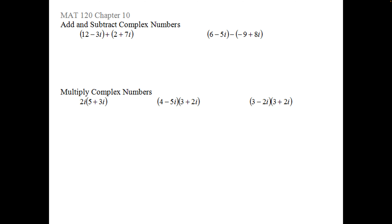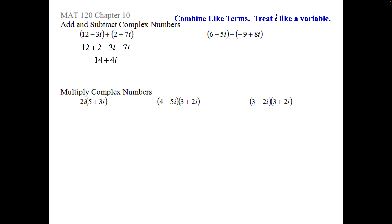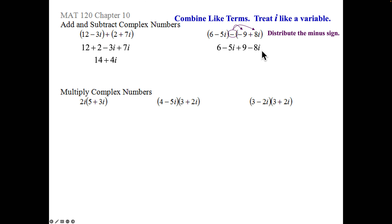Adding and subtracting complex numbers is just like combining like terms — treat i like a variable. For (12 − 3i) + (2 + 7i): 12 + 2 = 14, and −3i + 7i = 4i, giving 14 + 4i. When subtracting complex numbers, distribute the minus sign and change the signs, then combine: the real parts give 15 and the imaginary parts give −13i, so the result is 15 − 13i.